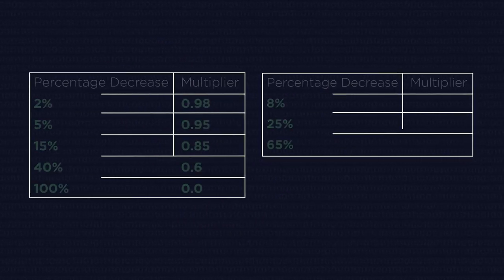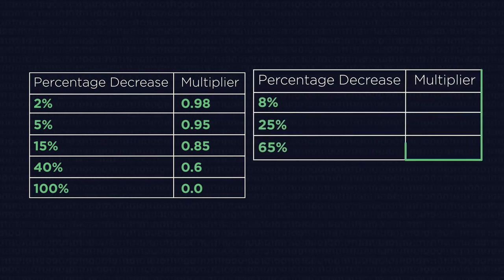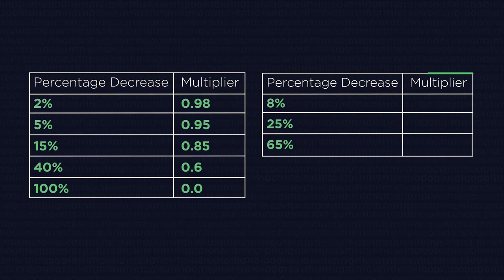But what happens with percentage decrease multipliers? Pause the video and find the missing values. How did you get on?